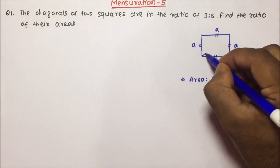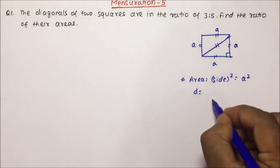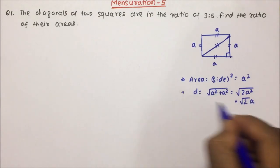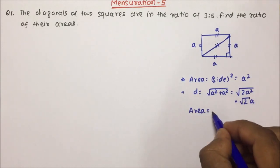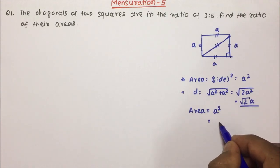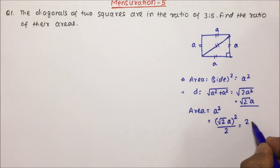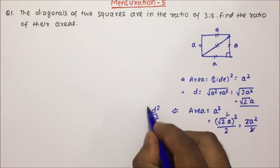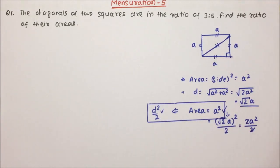Now friends, in terms of diagonal — what is the diagonal here? This is A and this is A, forming a right angle triangle. So diagonal will be √(A² + A²) = √(2A²) = A√2. So the diagonal is A√2. Now area in terms of diagonal: area = A², and since A = d/√2, we get area = (√2·A)² / 2 = d²/2. So area in terms of side is A², and area in terms of diagonal is d²/2.